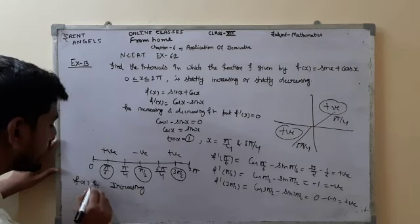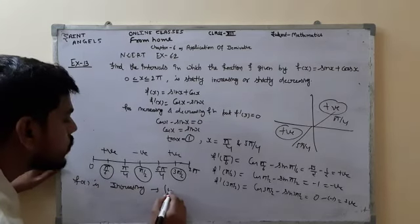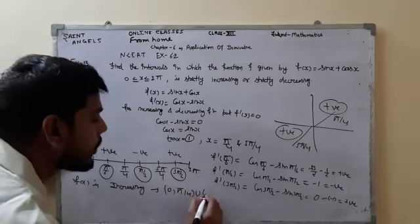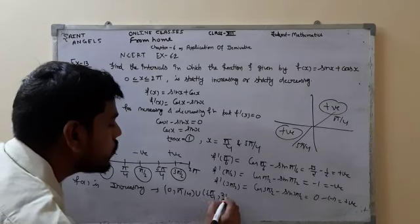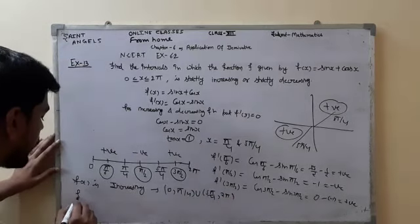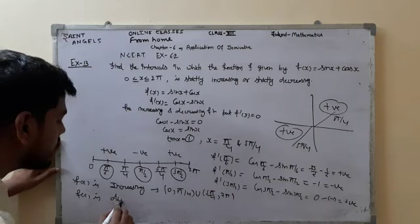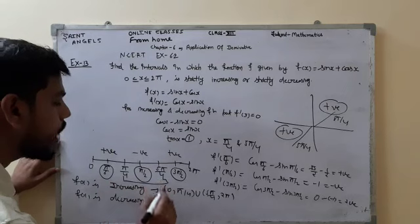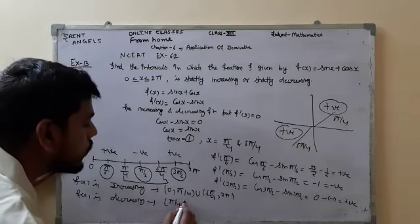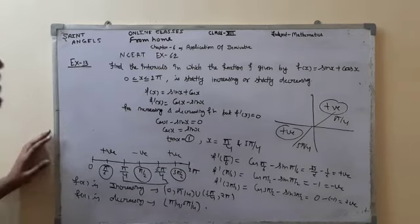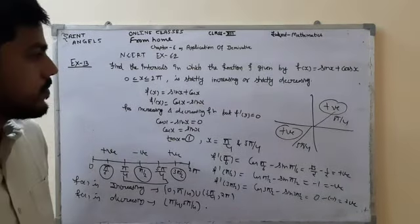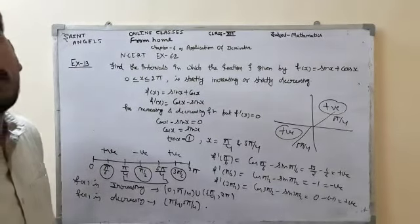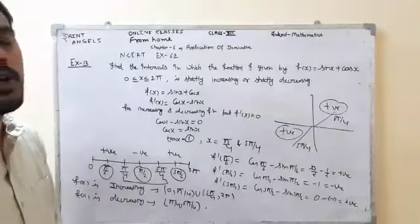So f(x) = sin x + cos x is strictly increasing on (0, π/4) ∪ (5π/4, 2π), and strictly decreasing on (π/4, 5π/4). Please pause the video and note it down. With this, Exercise 6.2 is completed. In the next video we will understand the concept of tangents and normals.